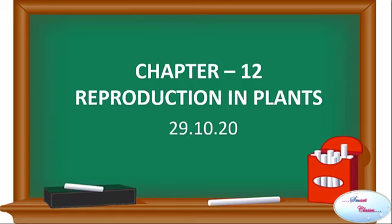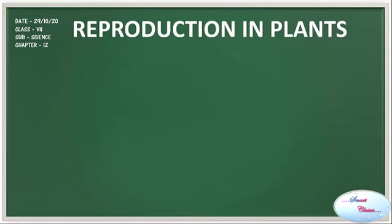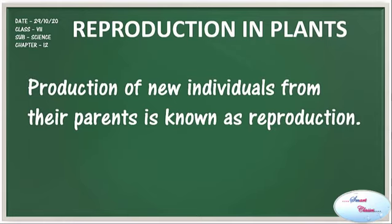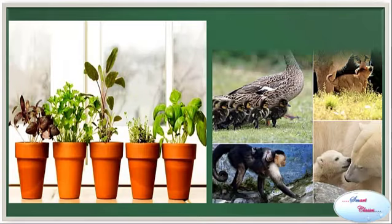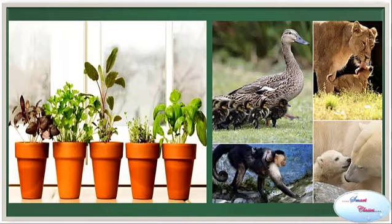The name of the chapter is Reproduction in Plants. So what does the word Reproduction mean? Production of new individuals from their parents is known as Reproduction. Reproduction occurs in all living beings which give rise to their offsprings — like plants, birds, animals etc. So we can say that Reproduction is the most fundamental process carried out by living organisms.